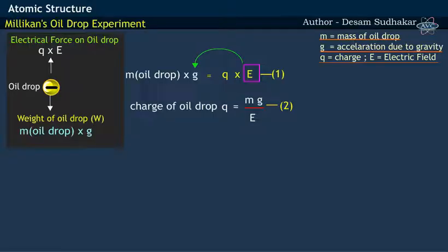Millikan has found out that electrical charge on oil droplet was equal to the integral multiple values of negative 1.602 into 10 to the power of 19 coulombs, i.e. Q equals to NE. Here, Q refers to the charge, while N is the integer which takes values 1 to 4.